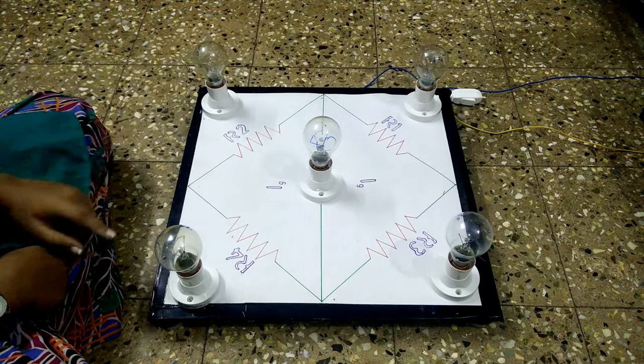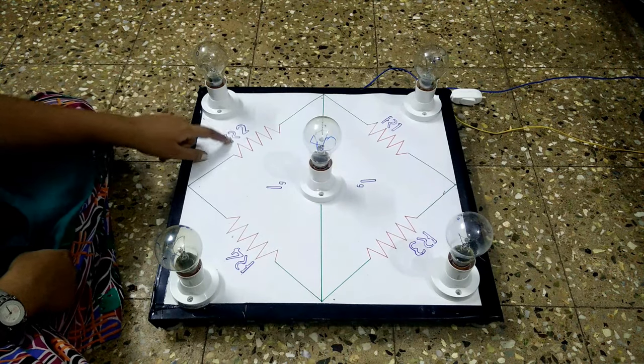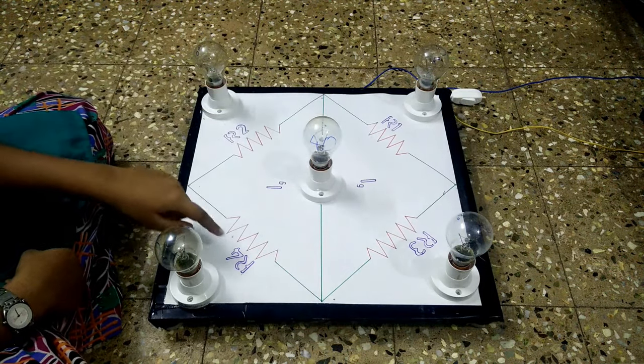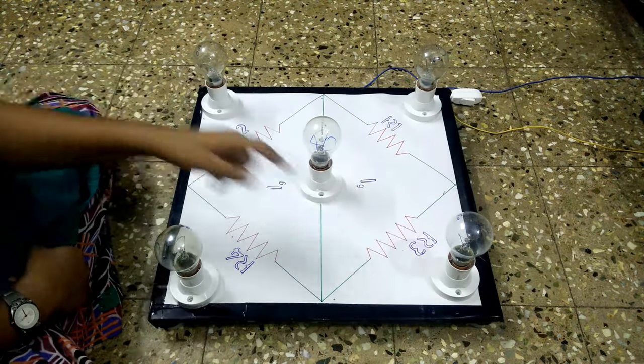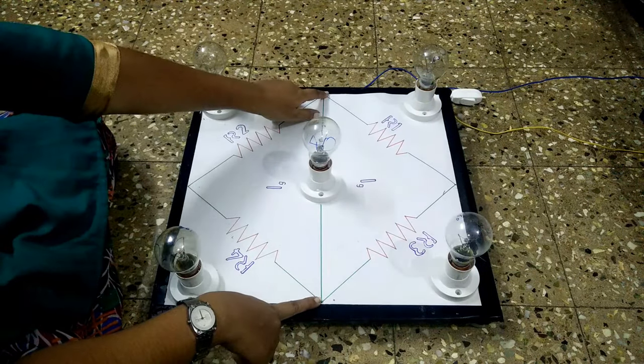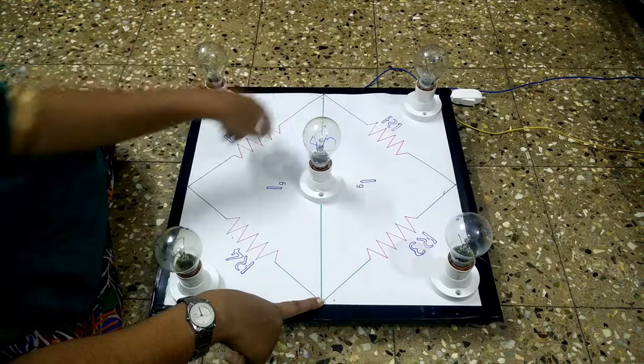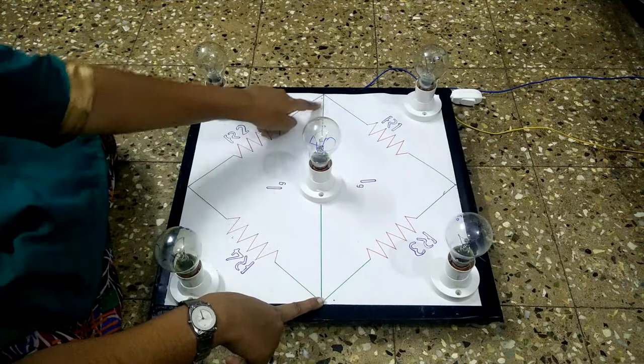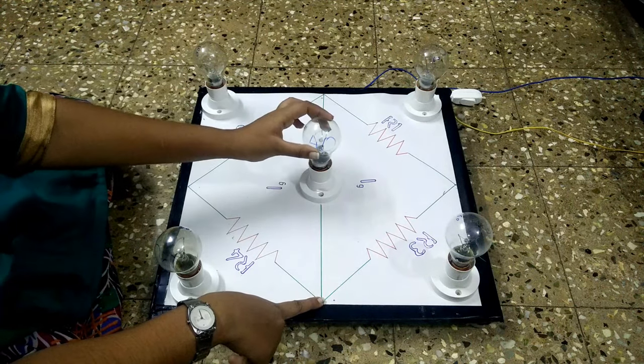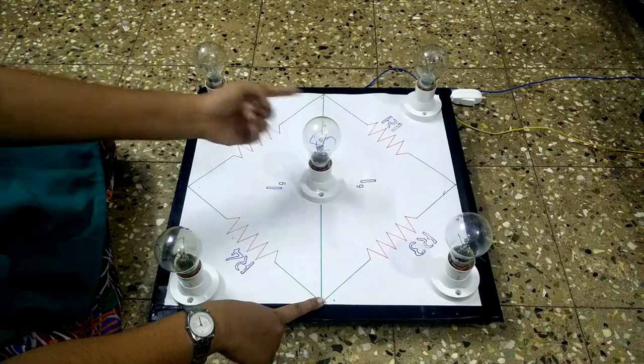The concept behind Wheatstone's bridge is that when the ratio of R2 and R1 equals the ratio of R4 and R3, then there is no potential difference between these two points. When there is no potential difference, no current flows through this path, and the bulb does not get excitation and so does not glow.